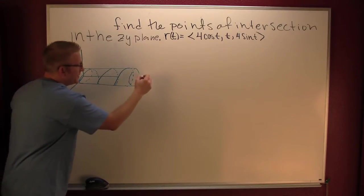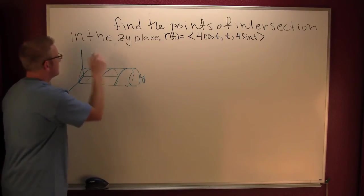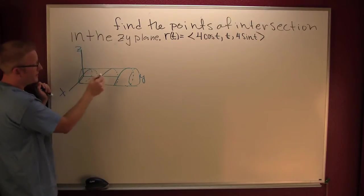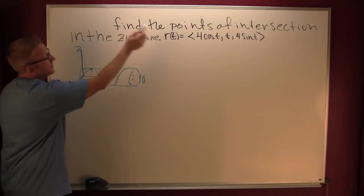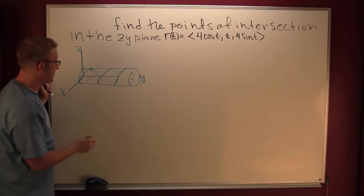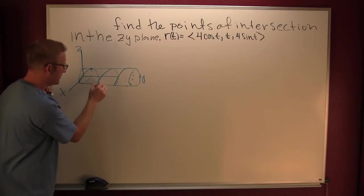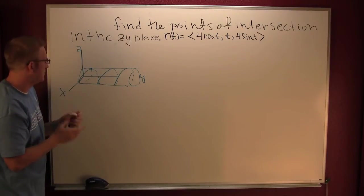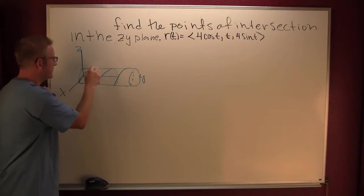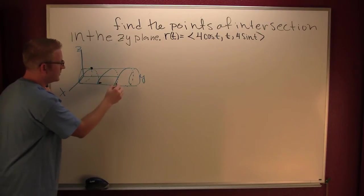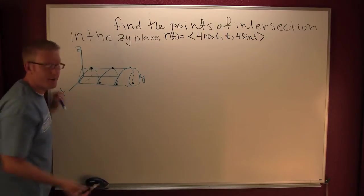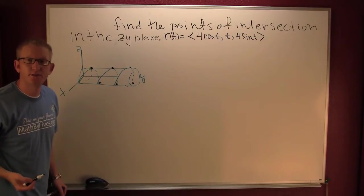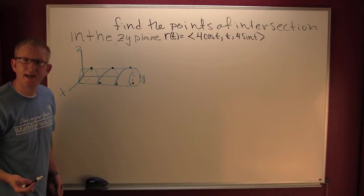What we are intending to do is we're trying to find the points of intersection of that vector value function and the zy-plane. So we see from the picture we're going to have plenty. But what we need to do is we need to find that t-value so that that happens.